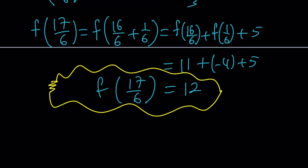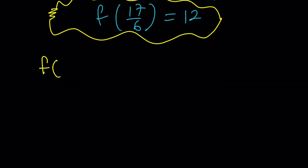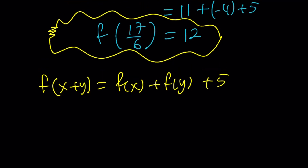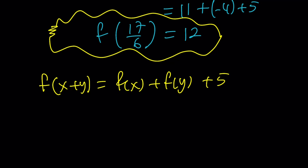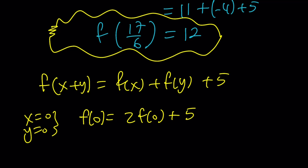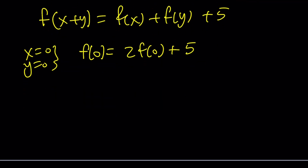The next step is going from a positive input to a negative input. The trick is: if I add 17 over 6 and negative 17 over 6, I get 0. So I need f of 0. To get f of 0, replace x and y both with 0 in the original formula: f of 0 equals f of 0 plus f of 0 plus 5, which means f of 0 equals negative 5.